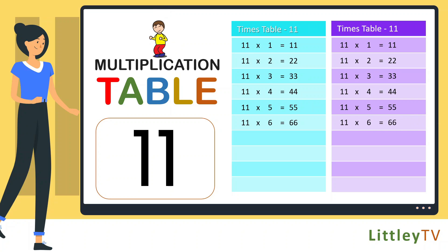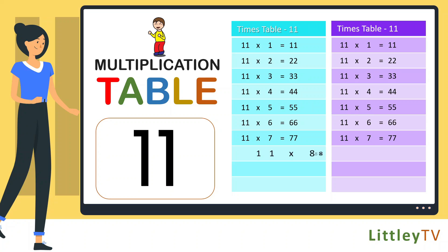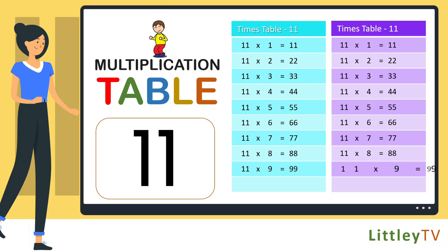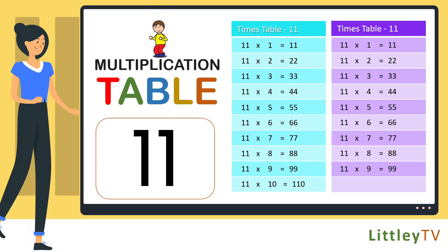11 sevens are 77, 11 eights are 88, 11 nines are 99, 11 tens are 110.